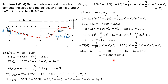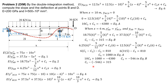Substituting C sub 4 equals 1080 into equation A: 10 C sub 3 plus 1080 equals negative 4380, so C sub 3 equals negative 546. Substituting C sub 3 into equation B: C sub 1 minus (negative 546) equals 315, so C sub 1 equals negative 231. Divided by EI, that is the slope at A.